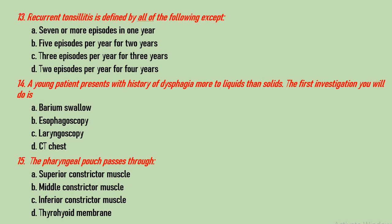Question number 14: a young patient presents with dysphagia more to liquids than solids. The first investigation you will do is barium swallow, esophagoscopy, laryngoscopy, or CT chest? Although all options seem correct, barium swallow is the best first investigation to find a motility disorder, as esophagoscopy, laryngoscopy, and CT chest are unable to identify a motility disorder. Question number 15: the pharyngeal pouch passes through which muscle? It passes through the inferior constrictor muscle between its two parts.